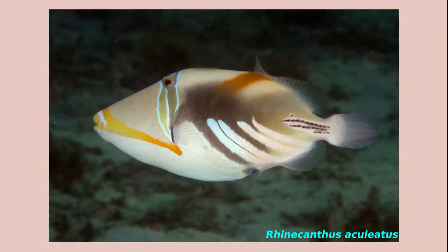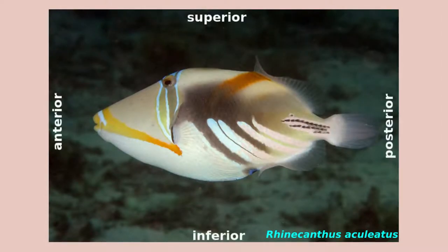Here's a Picasso triggerfish. The white labels on this picture give you the names for directions in the space around the fish. The front of the fish is the anterior end and the back is the posterior end. In English, posterior is a posh word for bottom or butt, if that helps you to remember. Above the fish is superior and below the fish is inferior. The words in English mean the same thing.